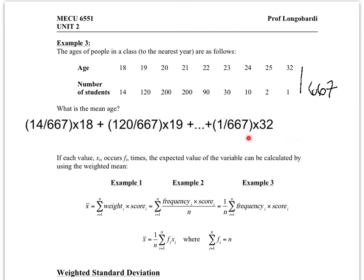Until the last component, the weight is 1 divided by 667 times score 32.